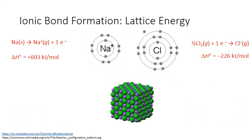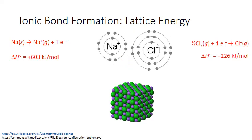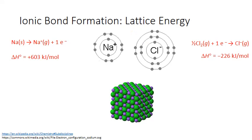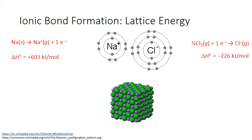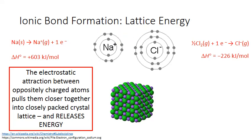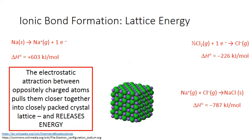The answer lies in the formation of the ionic crystal structure. After the electron is transferred between atoms, we form two oppositely charged ions. These ions are attracted to each other and move closer together. As all of the ions move together into a tightly packed crystal structure, it releases a lot of energy. This is known as the lattice energy of the compound.